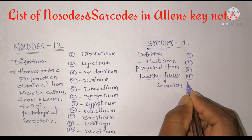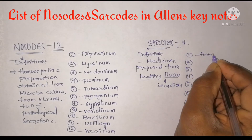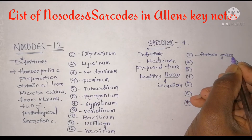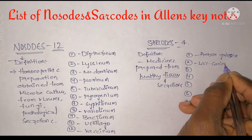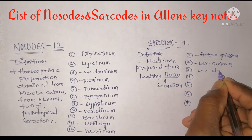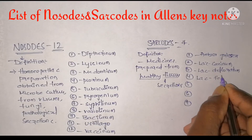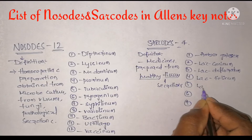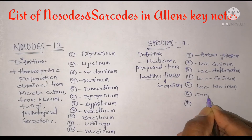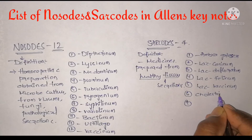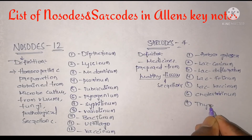The seven sarcode remedies are: first, Ambra Grisea; second, Lac; third, Lac Caninum; fourth, Lac Defloratum; fifth, Lac Uda; sixth, Cholesterinum; and seventh, Thyroidinum.